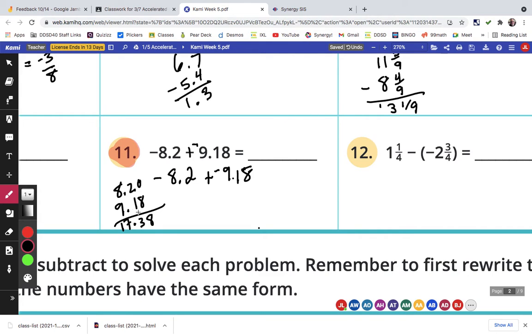And we get 17.38. Let me erase this just to double check here. Yep. It's going to be negative 17.38.